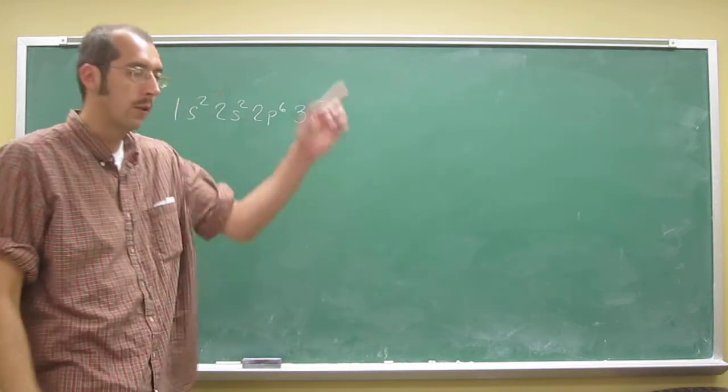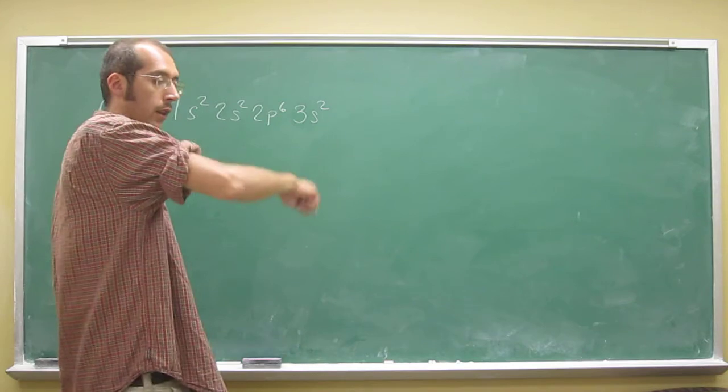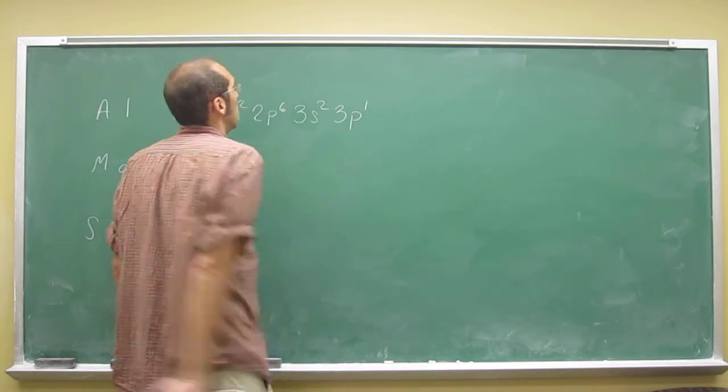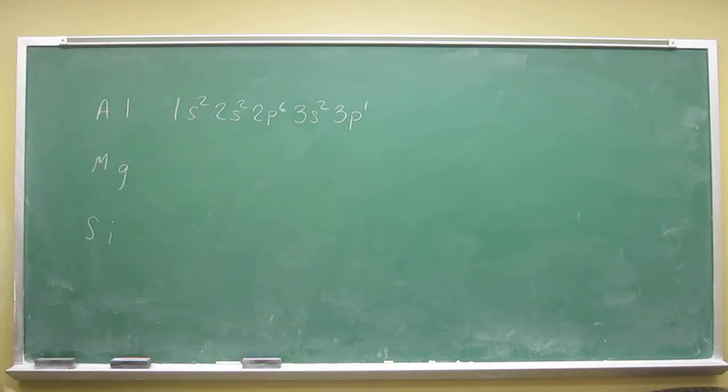Okay, and you're almost there. So then aluminum, its last electron is in that first p orbital, 3p1.